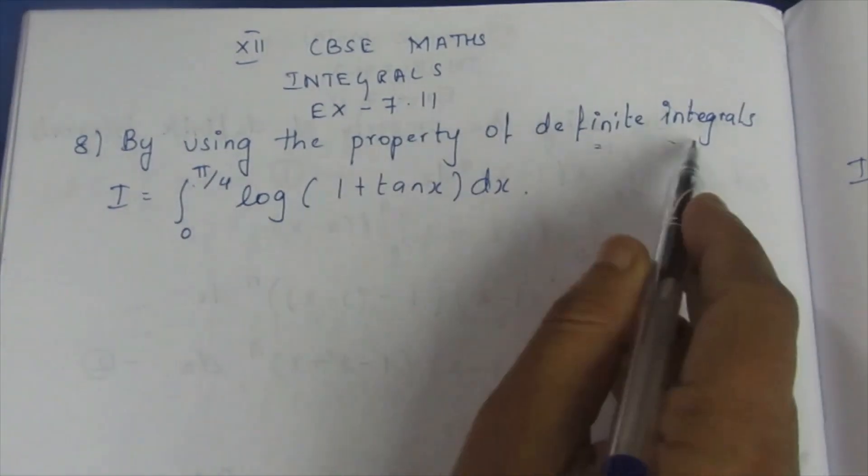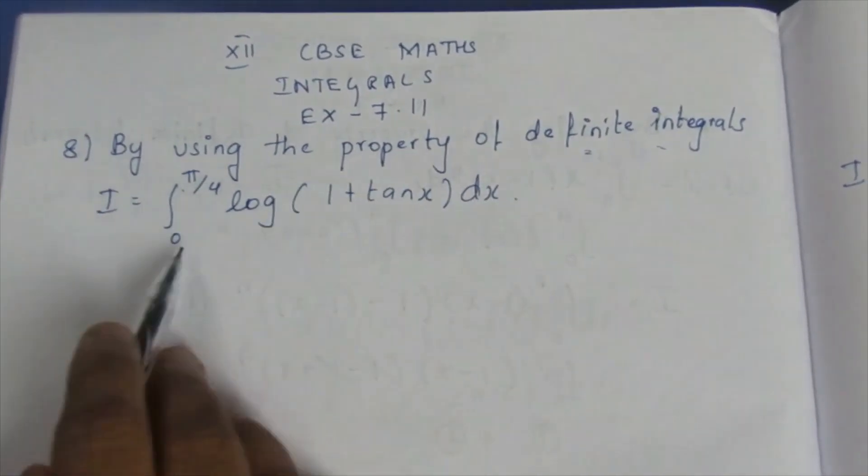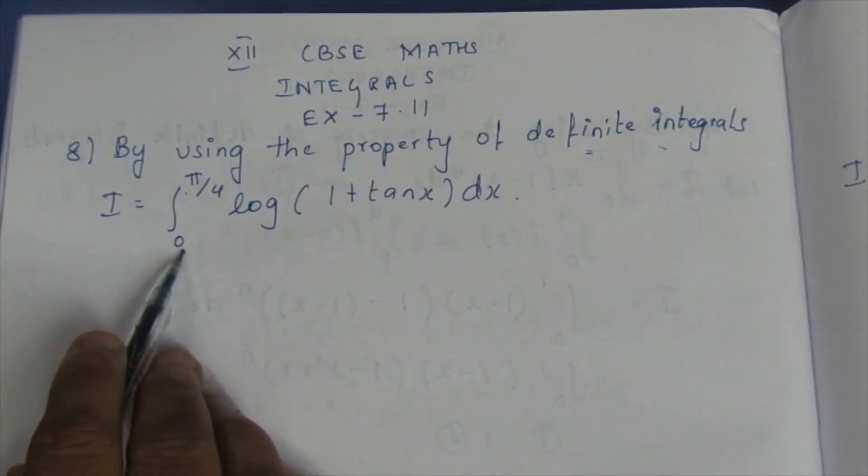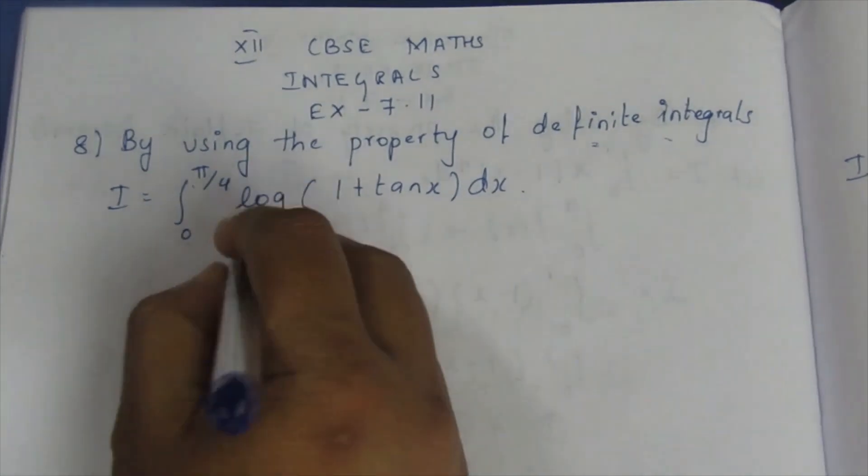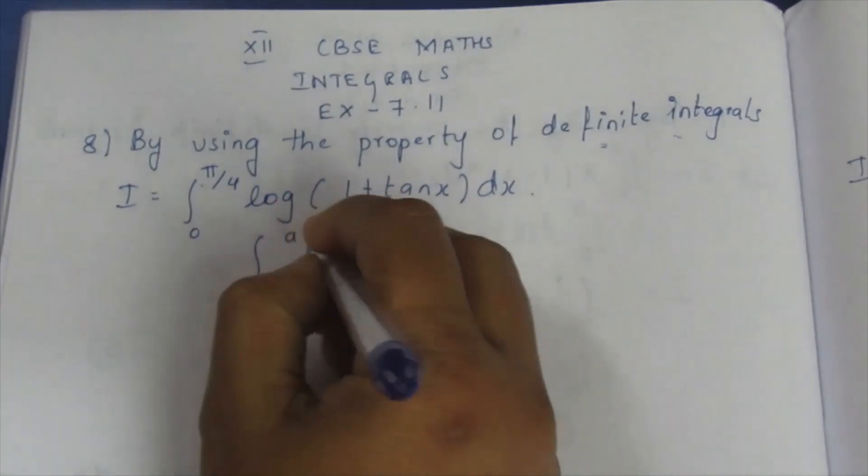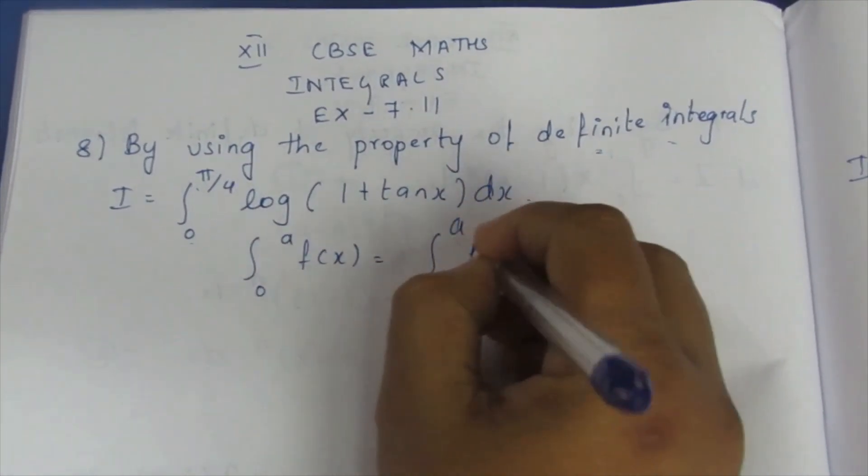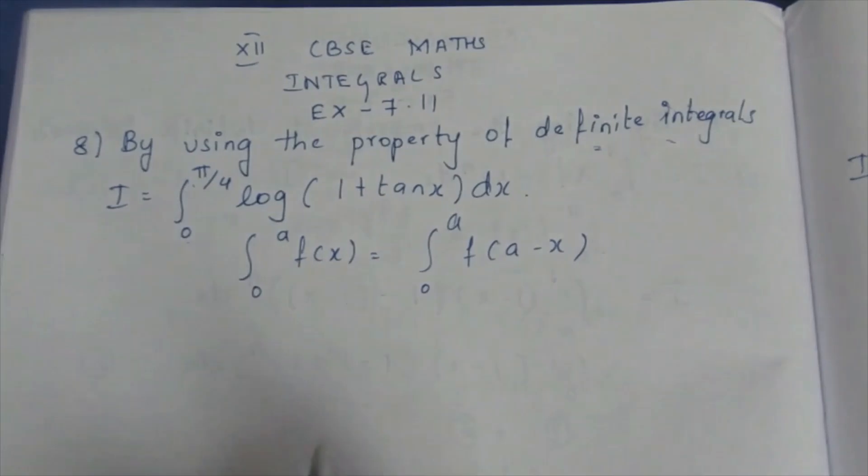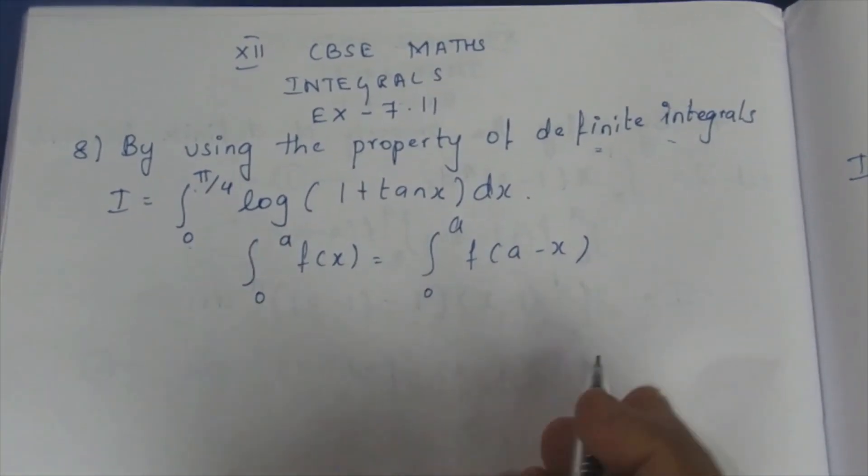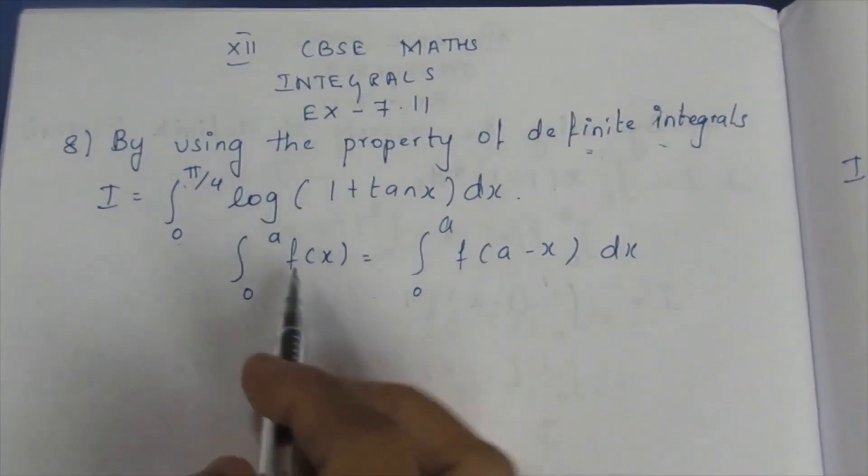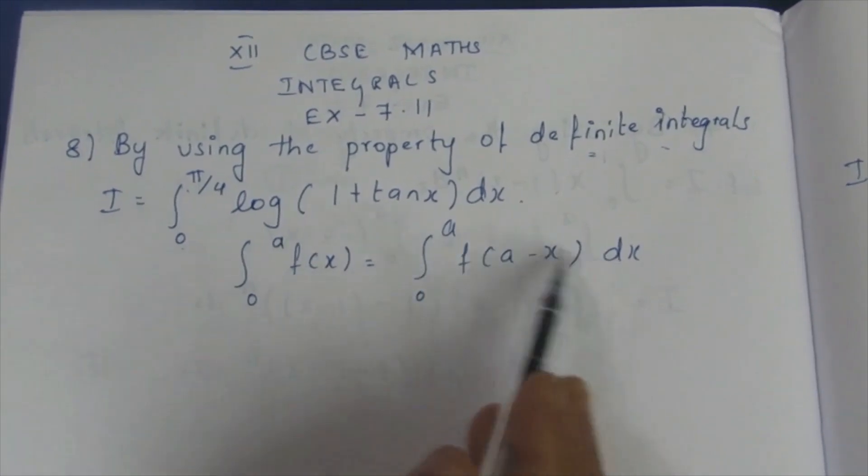Here we are going to use the definite integral property. The property here, it starts the lower value is 0. If it is 0, we have a formula: ∫₀^a f(x) dx = ∫₀^a f(a - x) dx. We can write the given question to be like this.